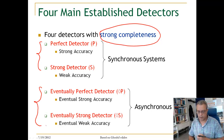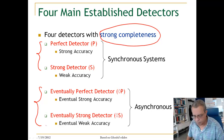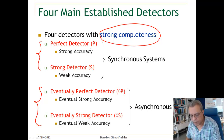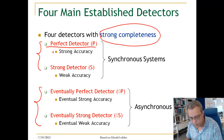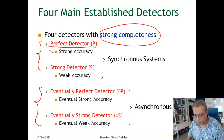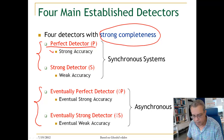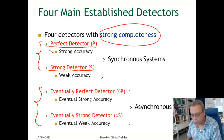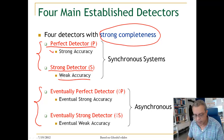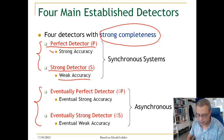The common one possible to implement in a synchronous system is the perfect failure detector, called P, which has strong accuracy. There is also the strong detector S, which combines strong completeness with weak accuracy — meaning one process is well-connected and can be accurately detected.